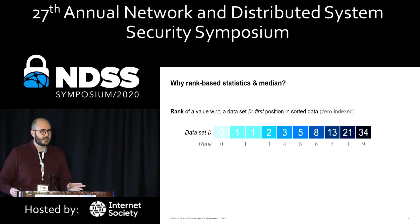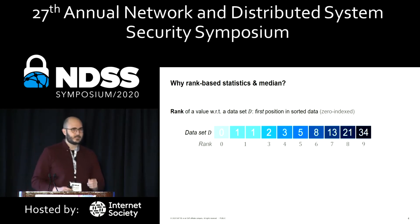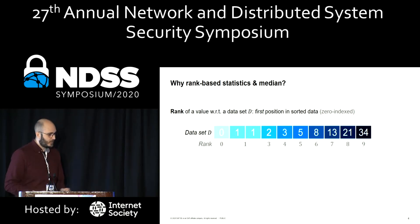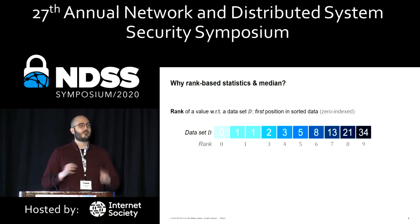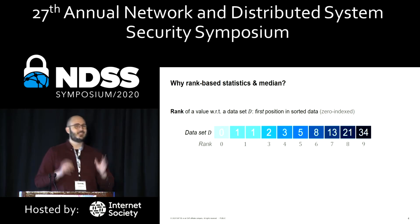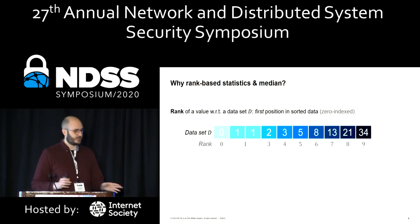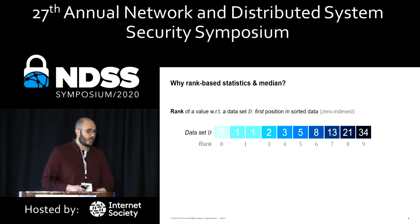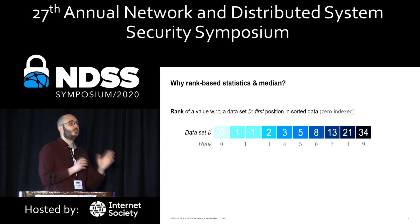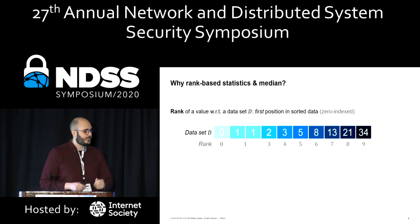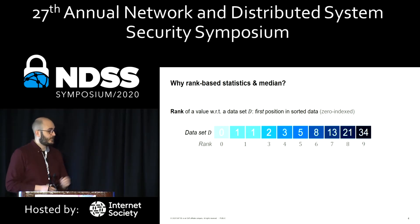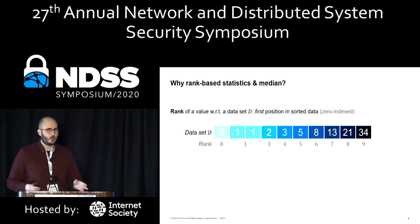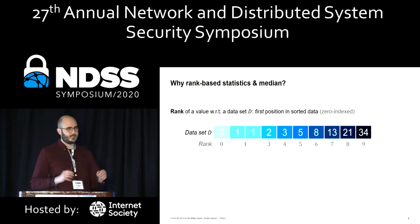Before we can start, we have to explain what rank-based statistics even are. The rank of a value with regard to a data set is basically the first position of this value in the sorted data if you use zero indexing. So with the Fibonacci numbers data set, the first rank is zero — no element is smaller than the first element. There's a duplicate, so both have rank one. If you have unique data, it's basically just the index in the data set.